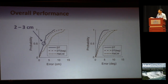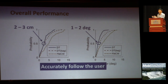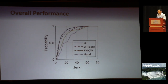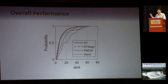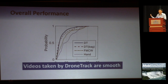Our system achieved 2 to 3 cm distance following error and 1 to 2 degree orientation following error. The following error is defined as the difference between the desired values and real values. To evaluate the video quality captured by the drone, we used the jerk metric, which captures the smoothness over consecutive frames in a video. Our approach achieved smaller jerks than both FMCW-based and handheld videotaping, indicating more stable and smooth video.